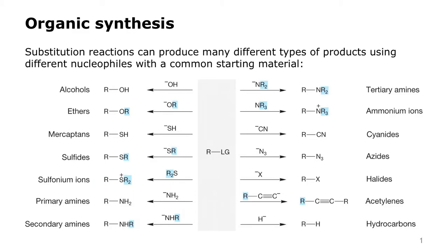Nitrogen is a good nucleophile and there are many different forms: the amide ion, alkyl amide ions, dialkyl amide ions — and these all produce different types of amines. Even neutral amines, shown here as a trialkyl amine, can react and produce ammonium salts. Cyanide is one of the best nucleophiles used in the laboratory and produces organocyanides.